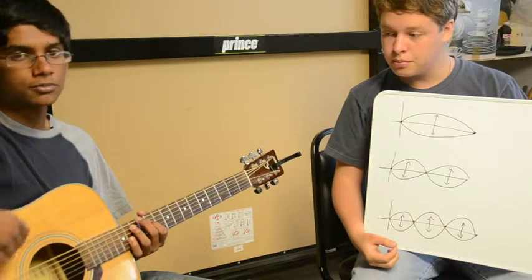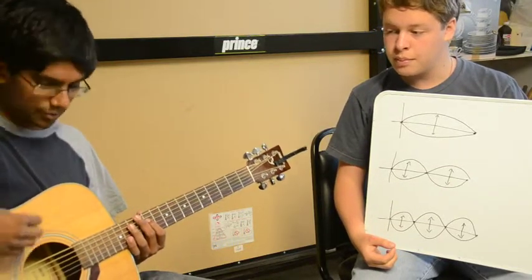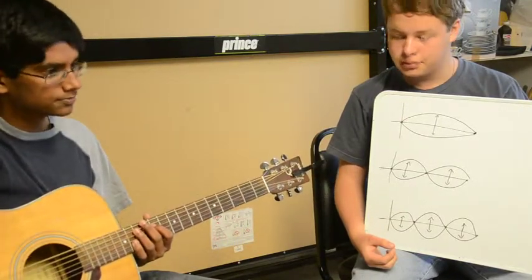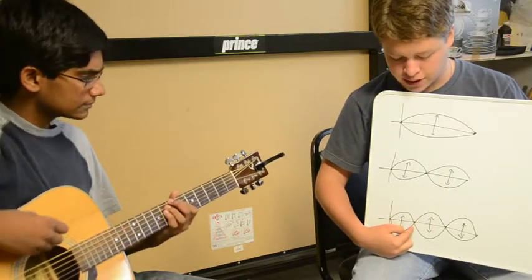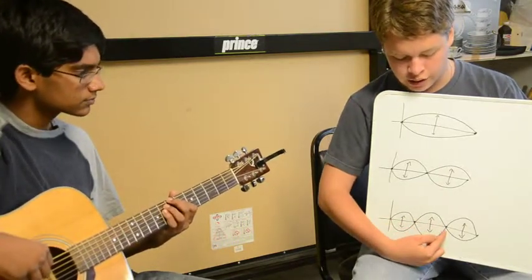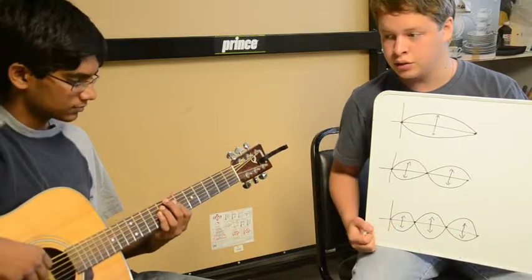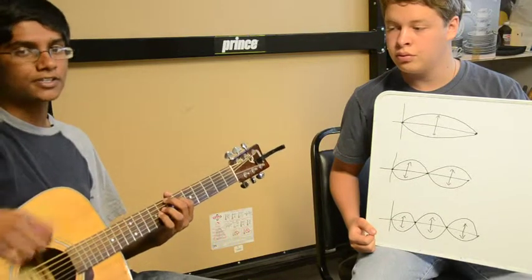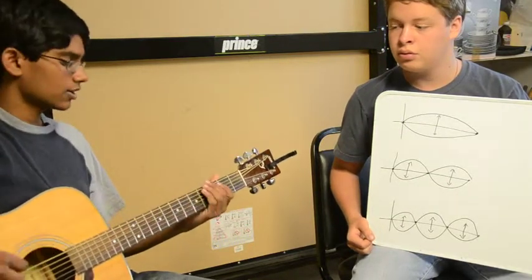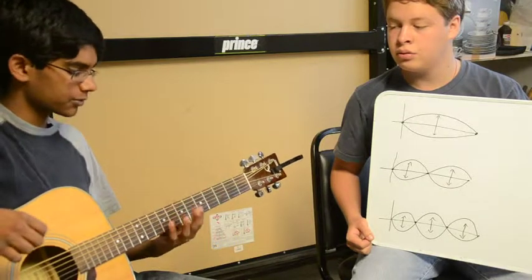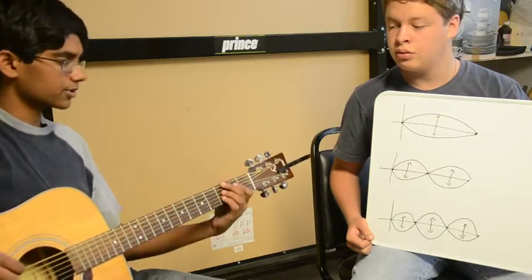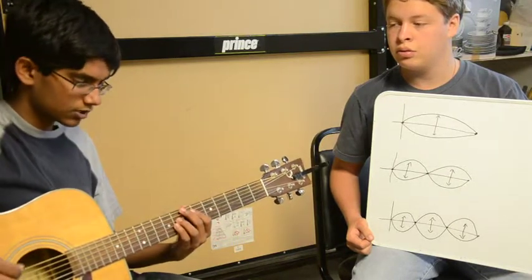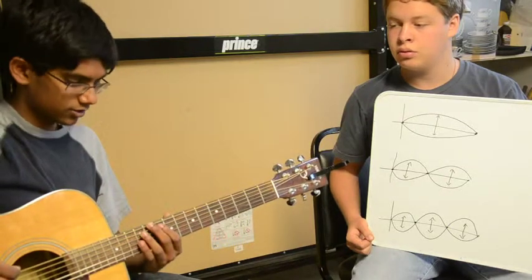Without actually putting my finger down, just muting the string, I'm still getting that tone. Next, he's going to put his finger above the 7th fret, and it's going to create another node at equal length, creating three vibrations in the string. This shows what it sounds like if I don't put my finger exactly on that node position versus when I'm muting it exactly over the 7th and 12th fret.